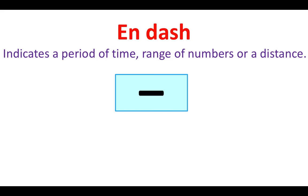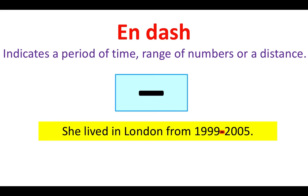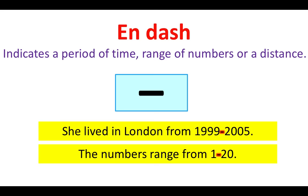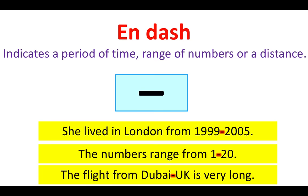N dash. An n dash indicates a period of time, range of numbers, or a distance. For example: She lived in London from 1999–2005. The numbers range from 1–20. The flight from Dubai to UK is very long.